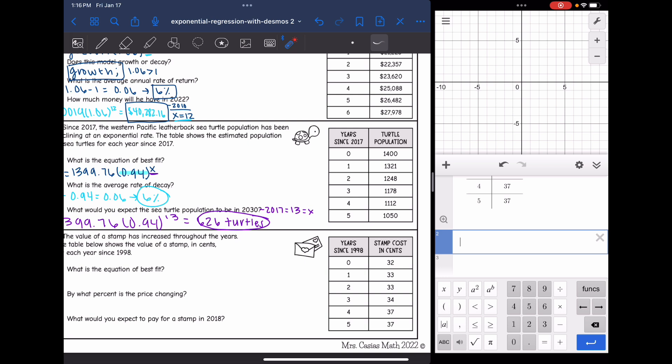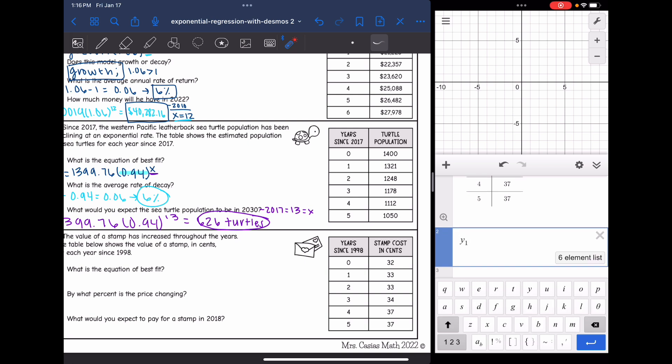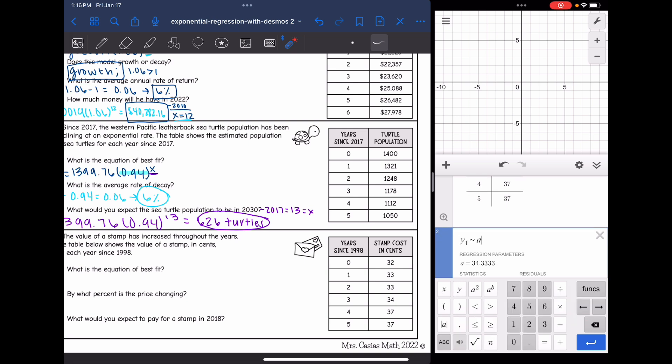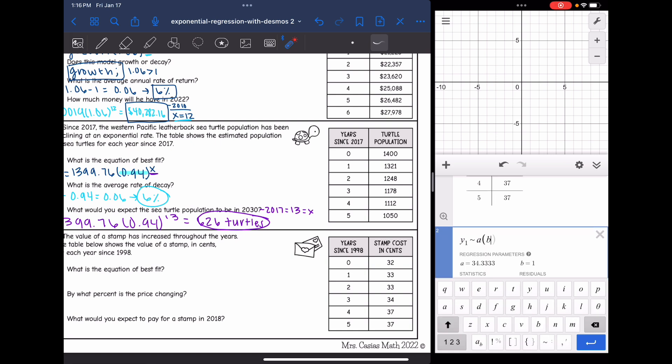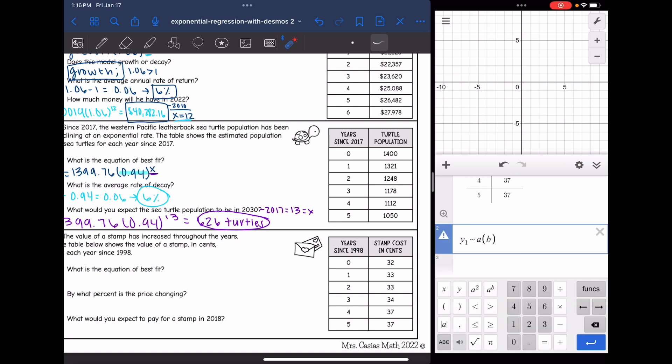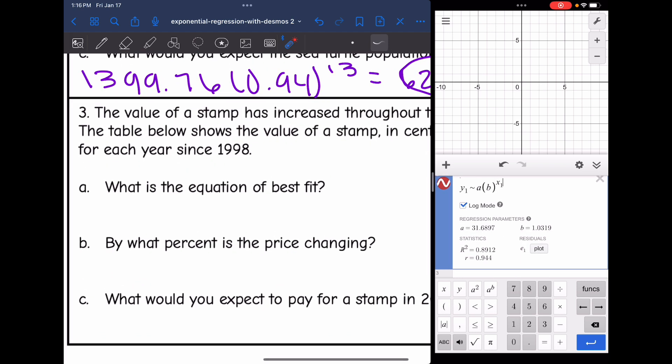Looks good. So now I'm ready to type my regression equation using X1 and Y1. So it'll be Y1 is about A parentheses B to the X1. And I'm going to check log mode. And there are my A and B values. So my equation of best fit is Y equals 31.69 times 1.03 to the X.